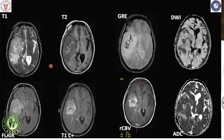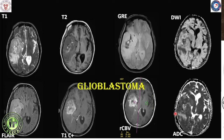A companion glioblastoma case in the right temporal lobe shows heterogeneous T2 appearance and T1 hyper-intensities due to hemorrhage, with heterogeneous post-contrast enhancement and extensive mass effect including effacement of adjacent sulci and sylvian fissures, midline shift, and transtentorial herniation — all pointing towards a high-grade glial neoplasm with elevated RCBV values.